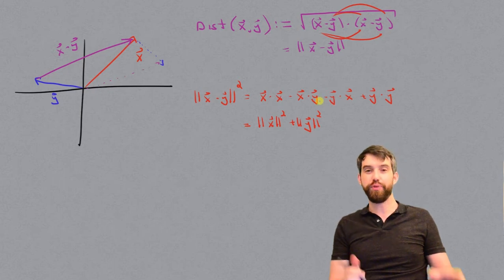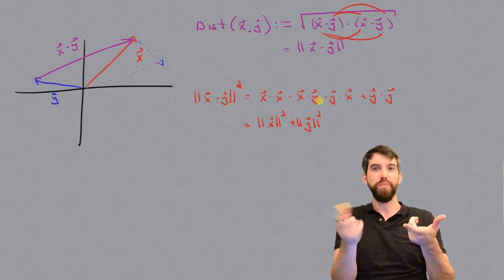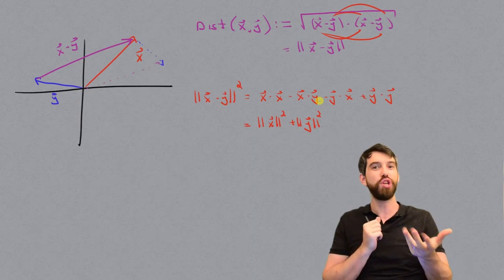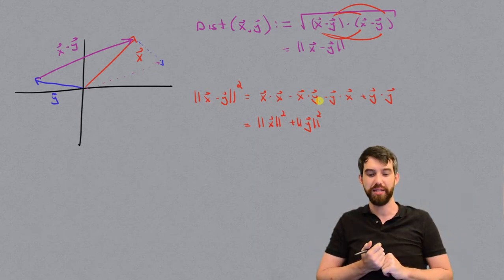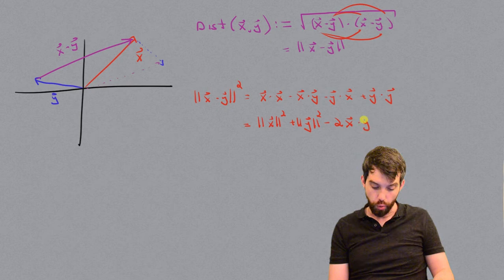And then I've got these two different expressions, x dot y and y dot x, but I told you earlier that we could commute inside of a dot product, that x dot y was equal to y dot x. So I've got two different copies of these, but minus signs both. So minus two x dot y.